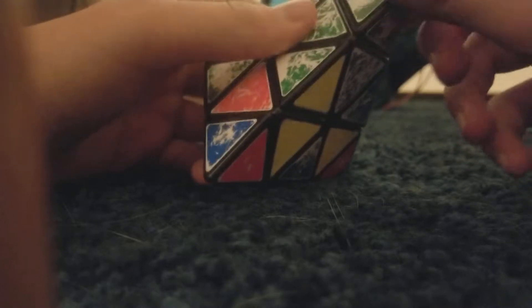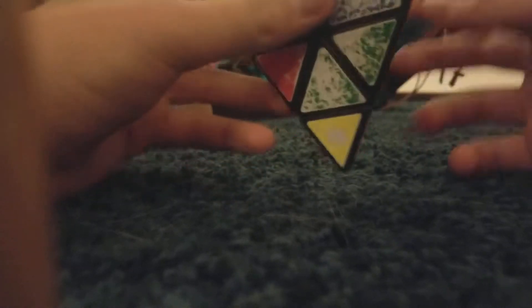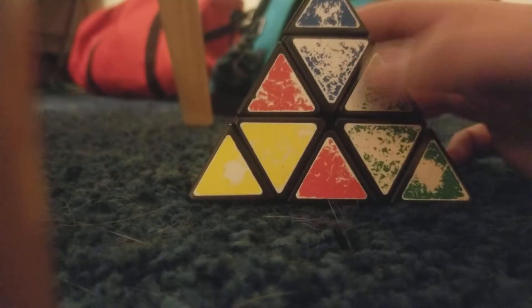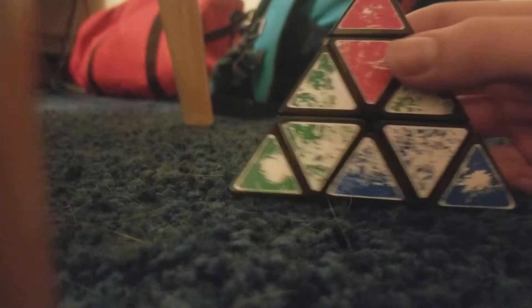and then we will turn this to be green and green, and then this one red and red, and the last one green and green. Okay, so the corners are done. That's the easiest part.